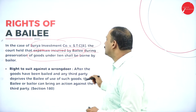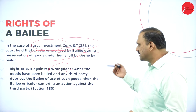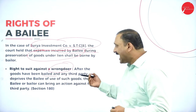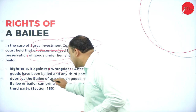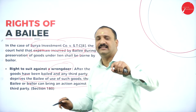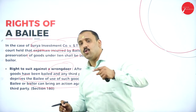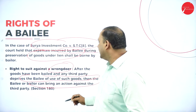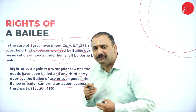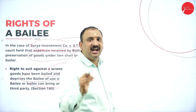The next right is the right to sue a wrongdoer. After goods have been bailed and any third party deprives the bailee of the use of such goods — creating a problem, making a barricade, bringing some sort of disturbance — the bailee or the bailer can bring an action against that third party.